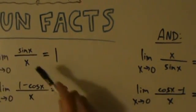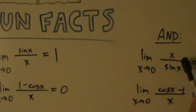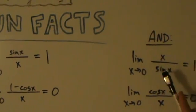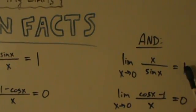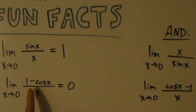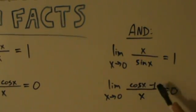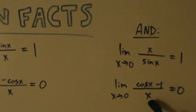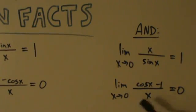Instead of sine of x over x, you could have x over sine x — take the limit of that as x goes to 0, and it's still 1. And instead of 1 minus cosine x, you might have cosine x minus 1, all divided by x. Take the limit as x approaches 0, and the answer is still 0.